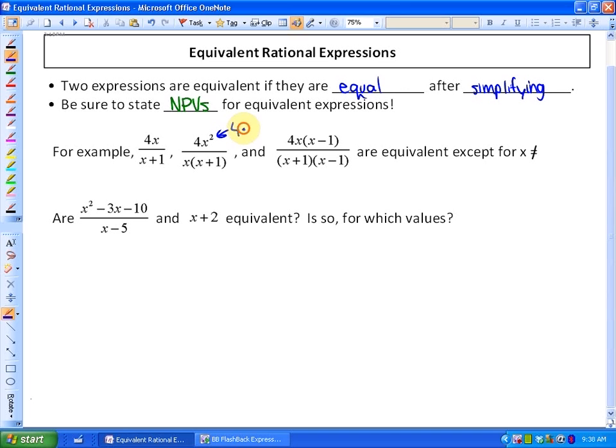4x squared is equivalent to 4 times x times x. So one of these x's could cancel out, and what you'll see is that what we have is 4x over x plus one, which is the same as this. The same with the next one. If I cancel out the common factors of x minus one, I also have 4x over x plus one. So all of these simplify to 4x over x plus one, so they are equivalent to each other after simplifying.